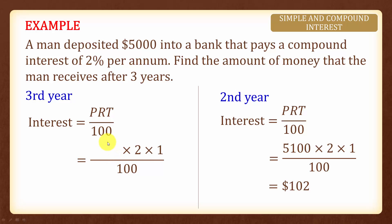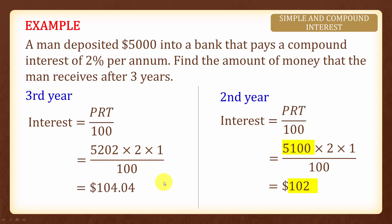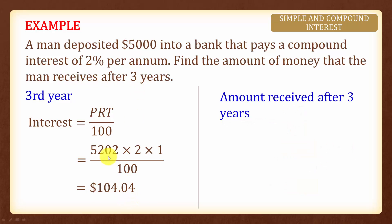For the third year, this amount of interest will earn interest as well. The principal amount will be five thousand one hundred dollars plus the interest of one hundred and two dollars from the second year, giving us five thousand two hundred and two dollars. This earns an interest of two percent for one year, divided by one hundred. Therefore the interest for the third year is one hundred and four dollars and four cents.